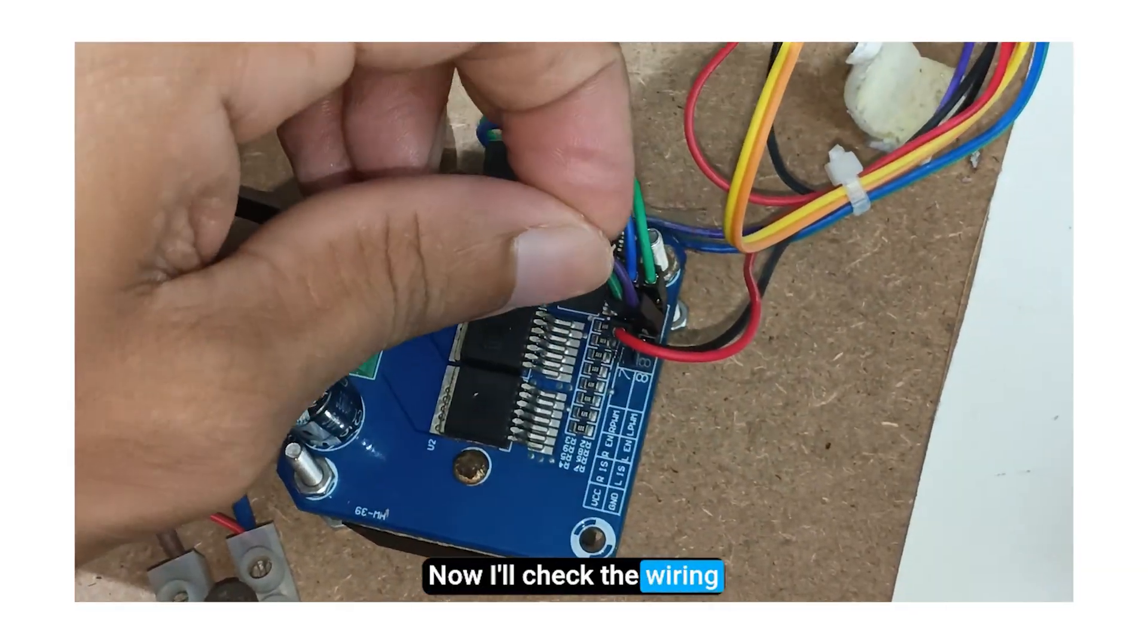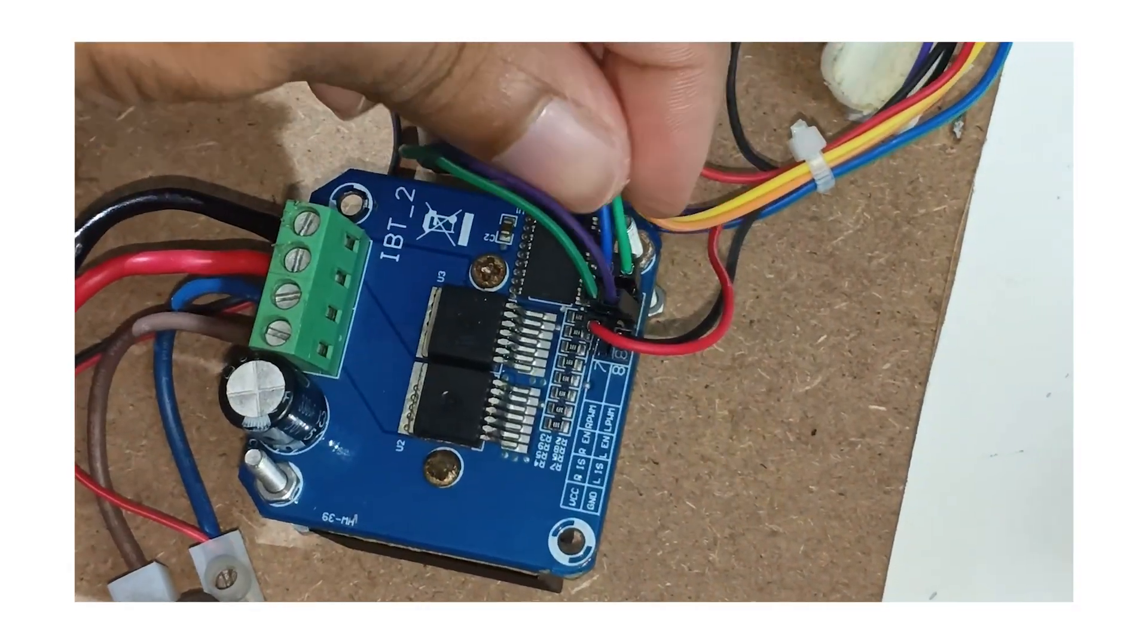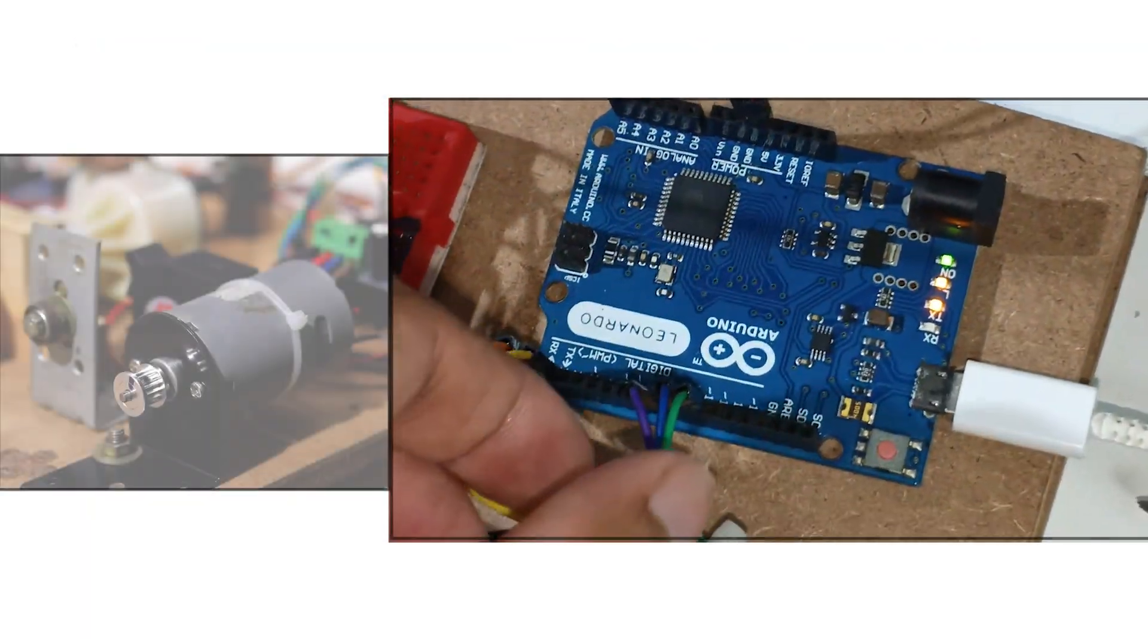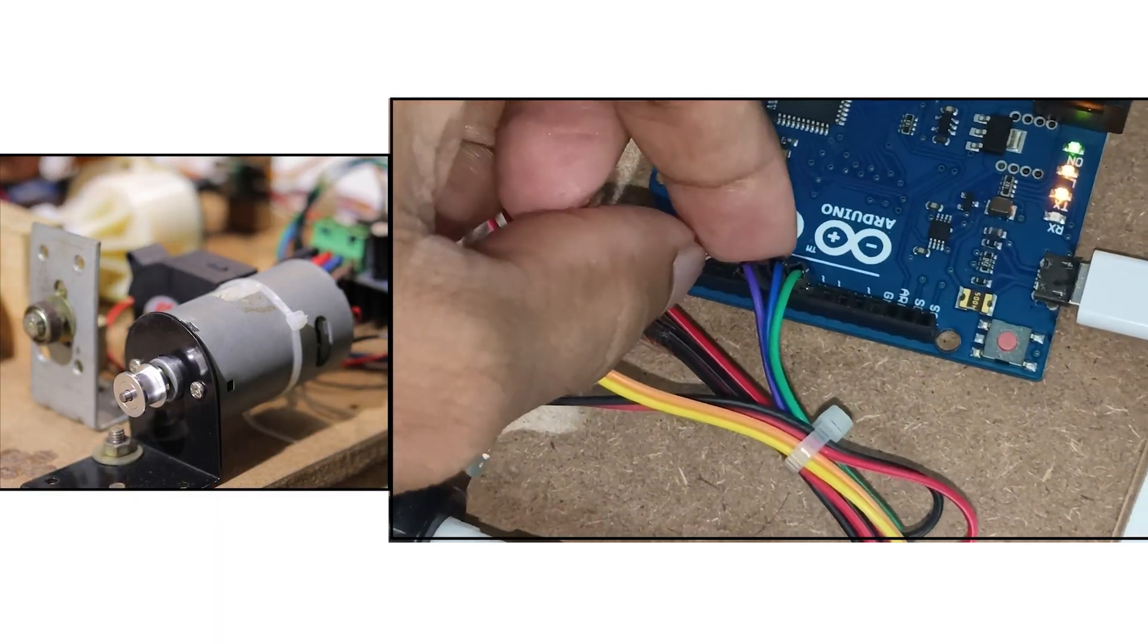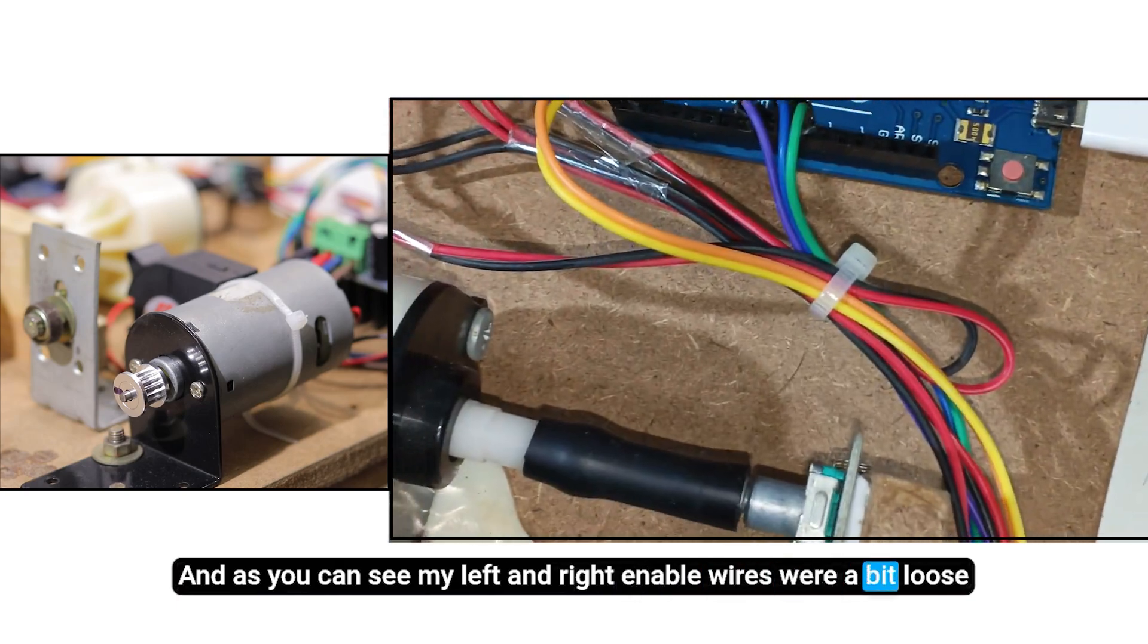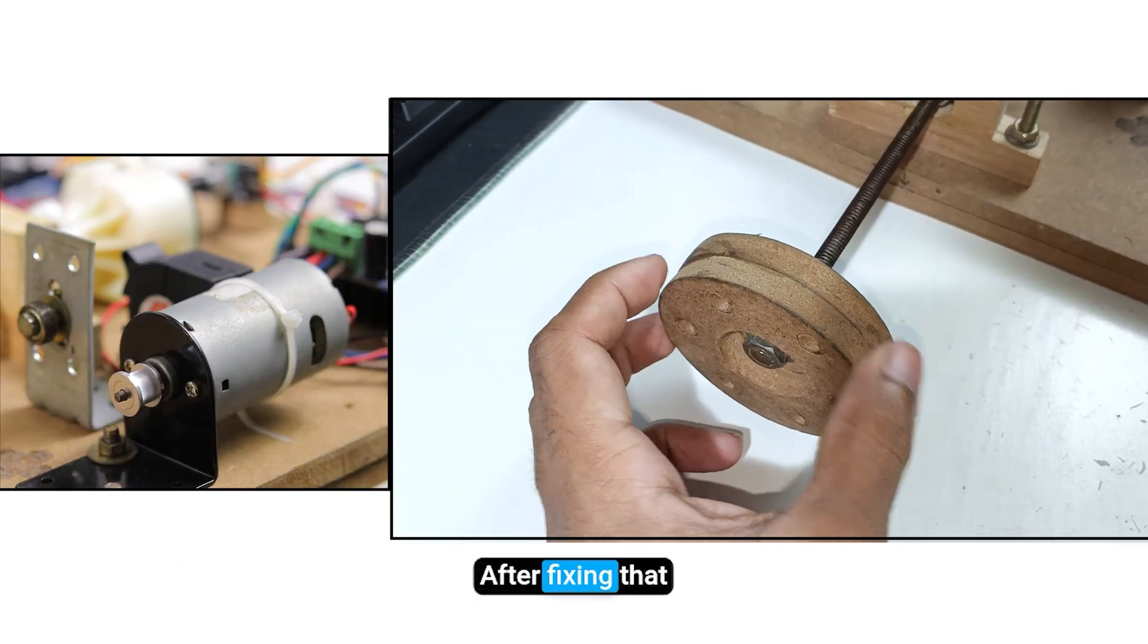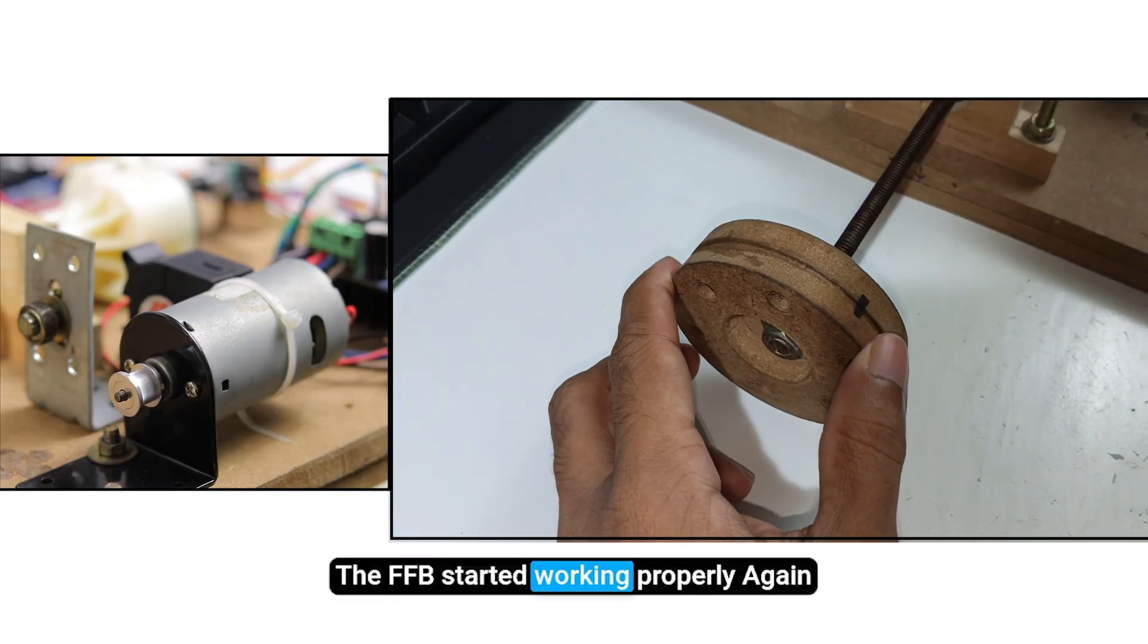Now I'll check the wiring. And as you can see, my left and right enable wires were a bit loose. After fixing that, the FFB started working properly again.